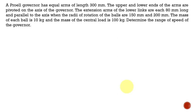Welcome to my lecture. Today we are going to see how to find out the range of speed of the Proell governor. A Proell governor has equal arms of length 300 mm. The upper and lower ends of the arms are pivoted on the axis of the governor. The extension arms of the lower links are each 80 mm long and parallel to the axis. When the radius of rotation of the balls are 150 mm and 200 mm, the mass of each ball is 10 kg and the mass of the central load is 100 kg. Determine the range of speed of the governor.